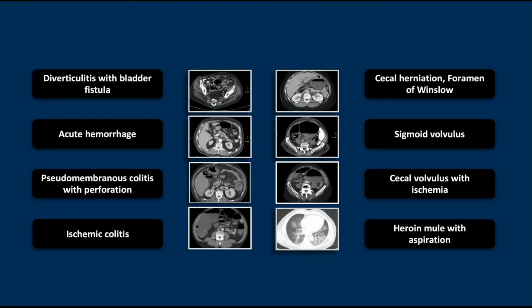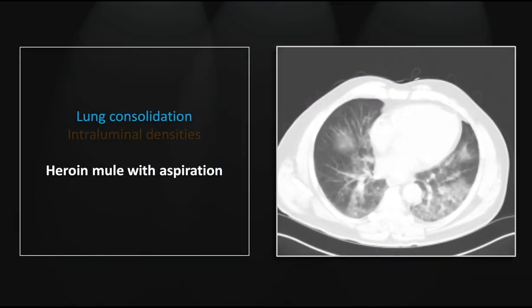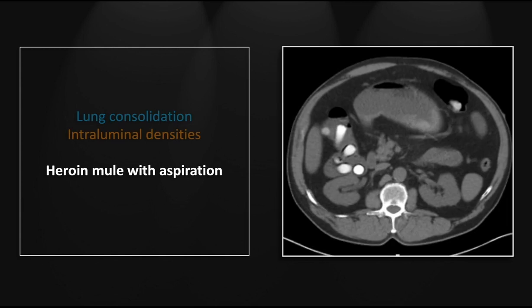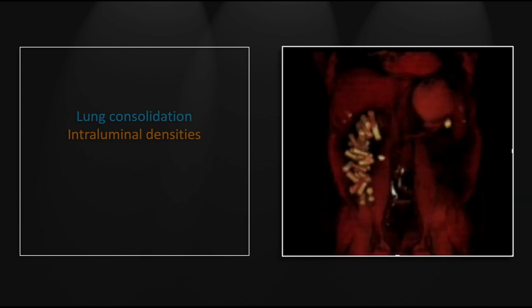Our last case is an unusual one. This was a heroin mule who suffered aspiration, most likely while trying to ingest the heroin capsules that ended up in his colon. In the lung bases, you can see consolidation consistent with aspiration. And in the colon, there are multiple hypodense capsules containing packed densities that represent compacted drugs, present throughout the colon. This is a fairly impressive haul.